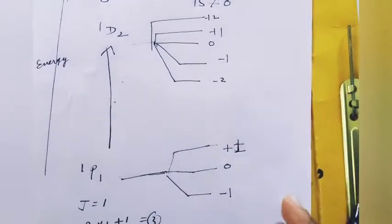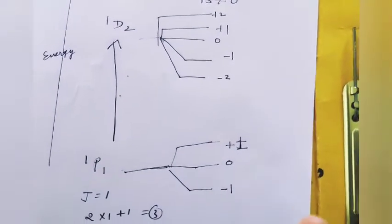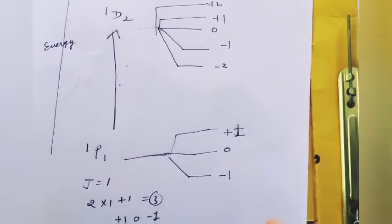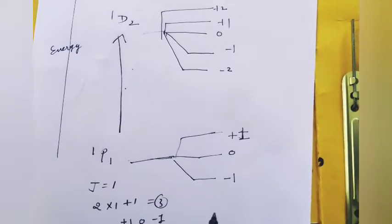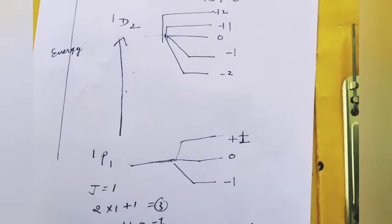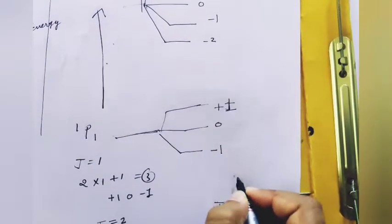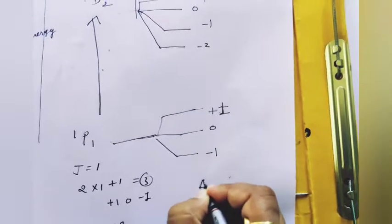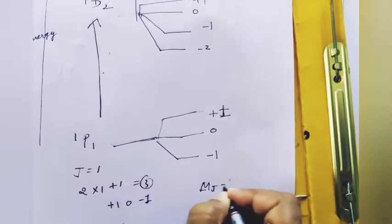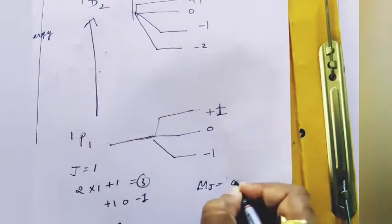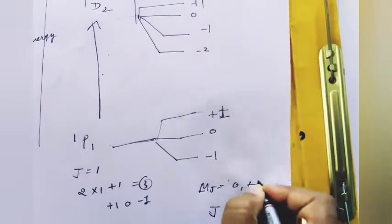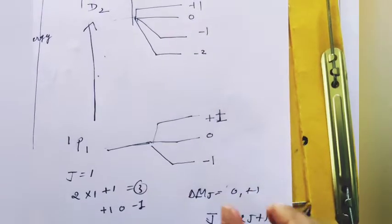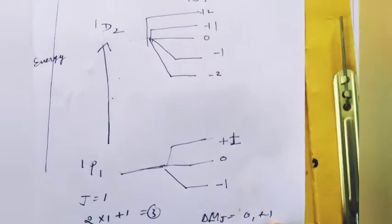We now select the allowed transitions between the split levels using the selection rule delta mJ equals 0 or plus or minus 1.